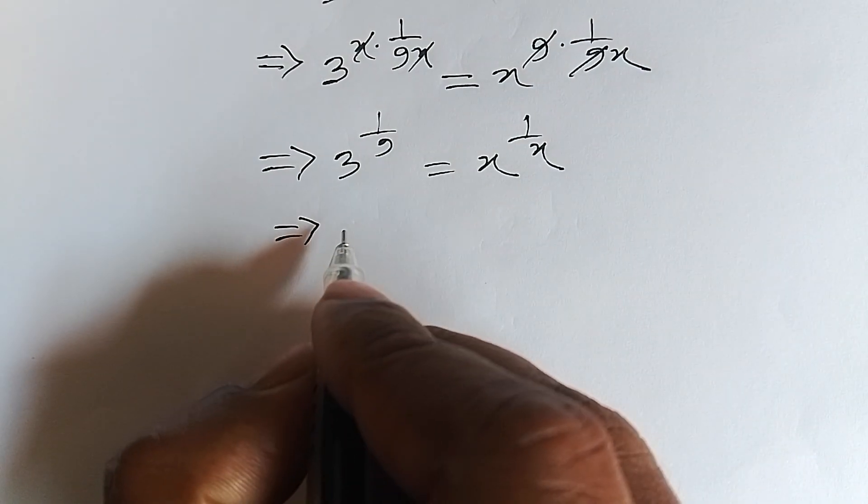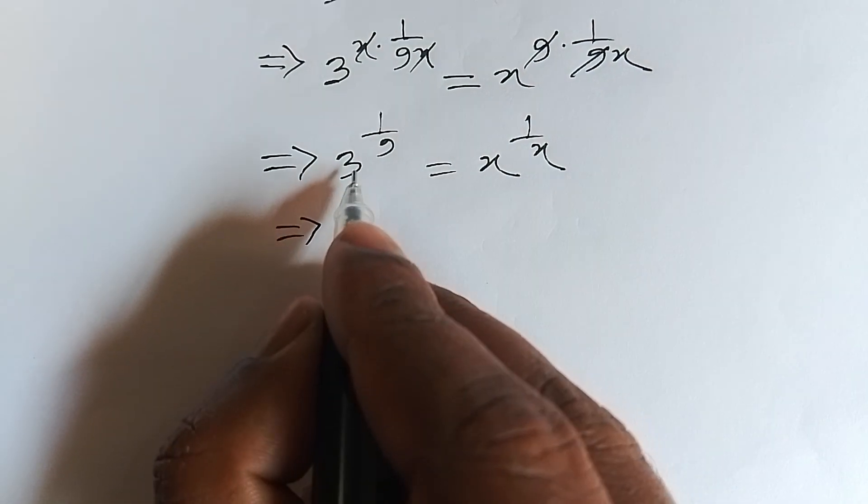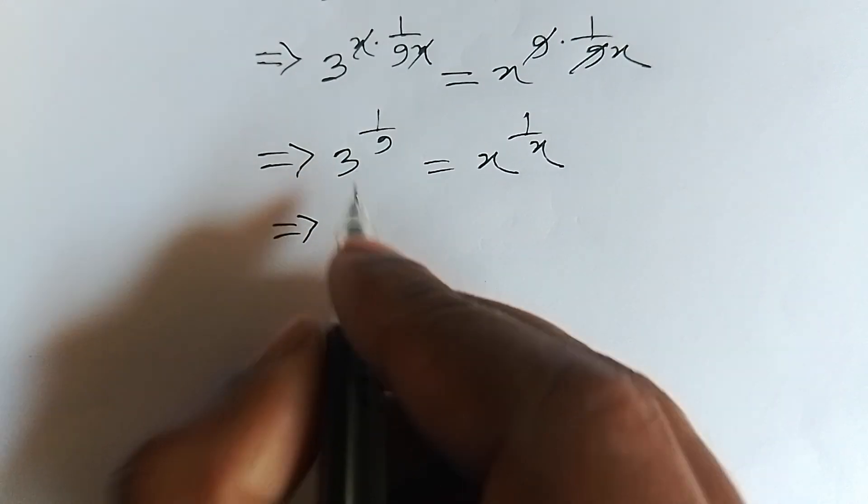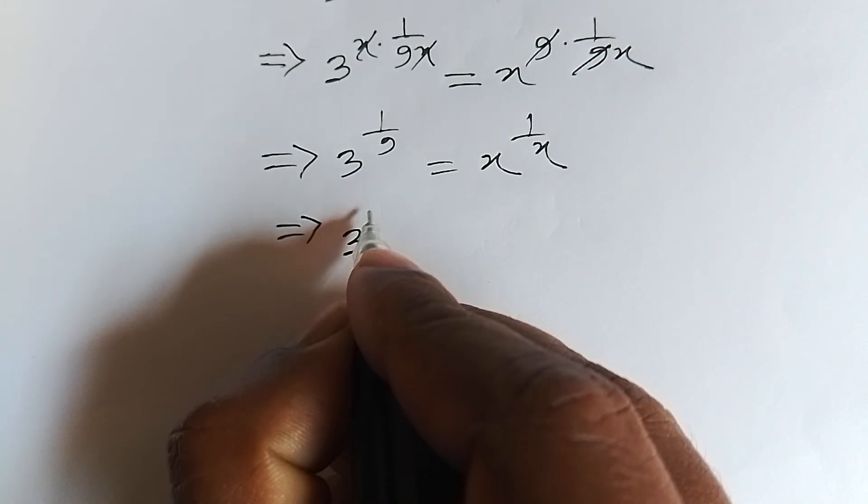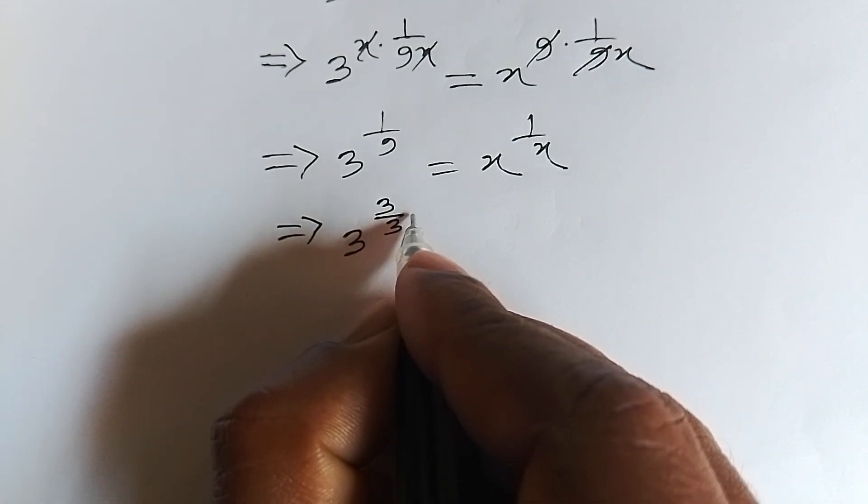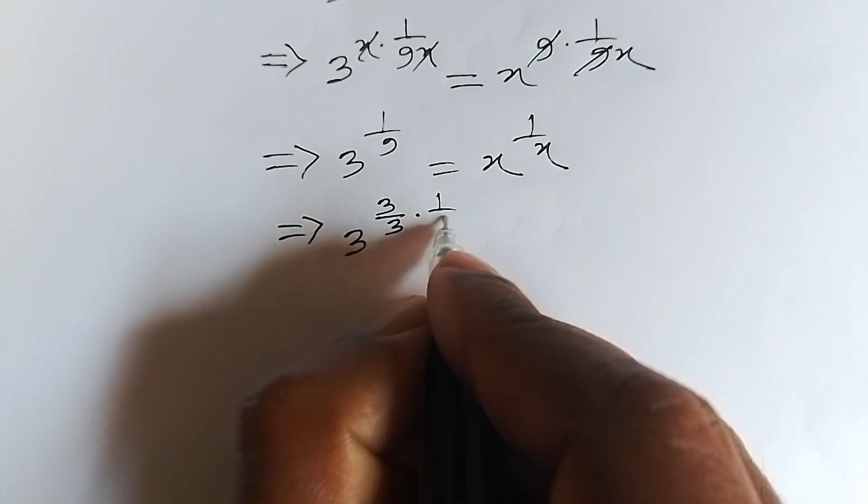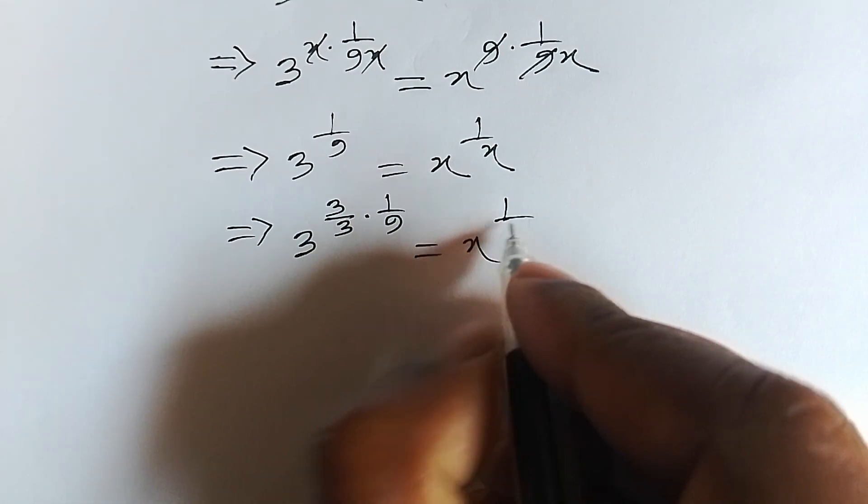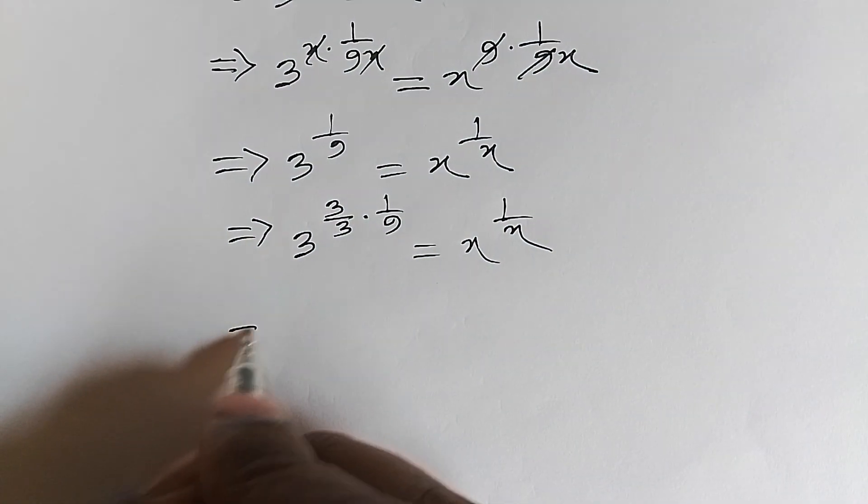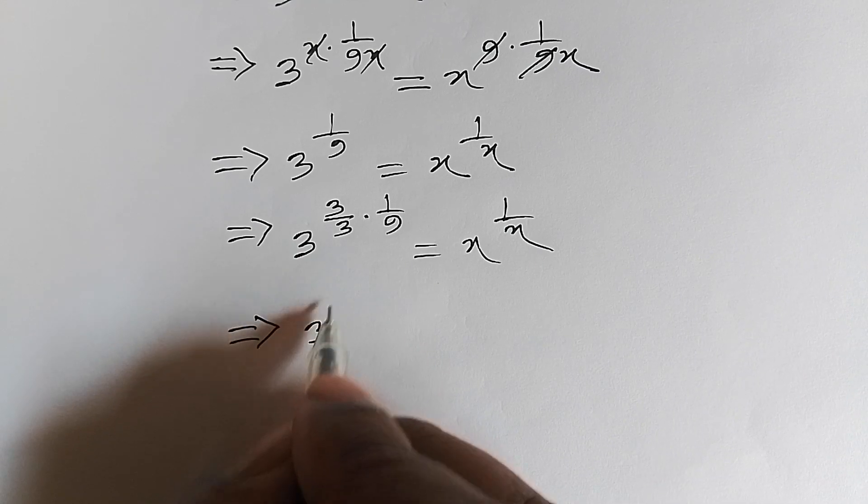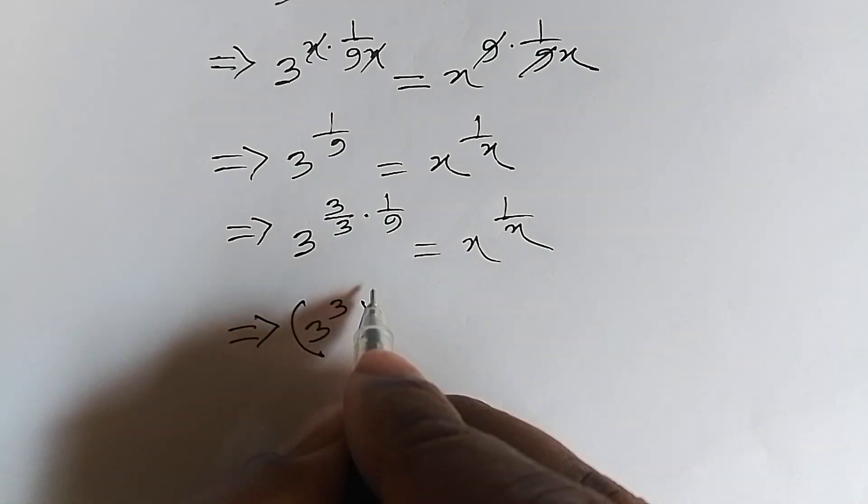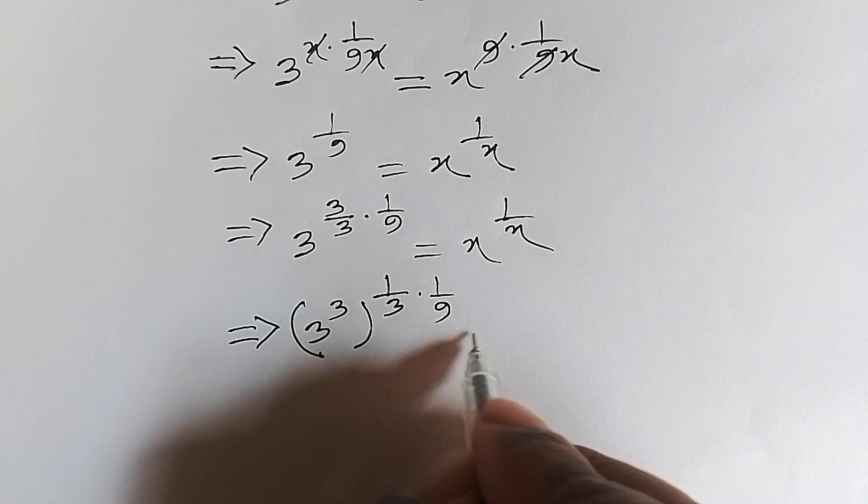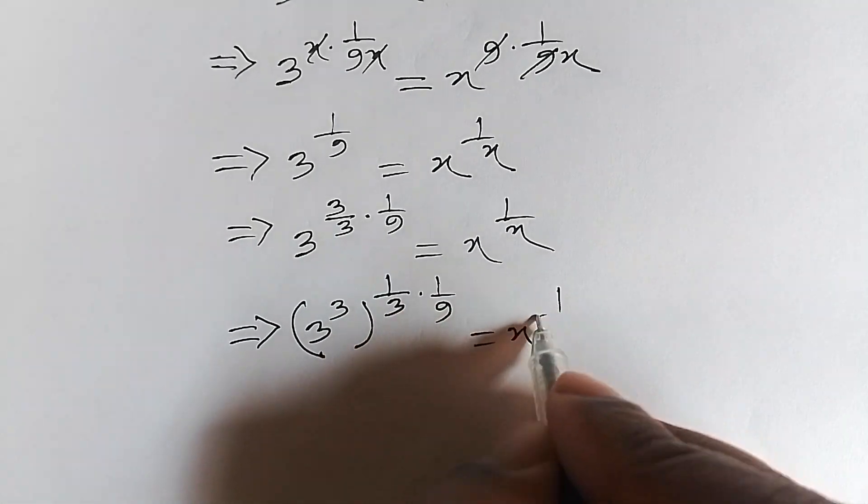Now multiply the power by 3 over 3. So 3 to the power of 3 over 3 times 1 over 9 equals x to the power 1 over x. Or, 3 to the power 3 times 1 over 27 equals x to the power 1 over x.